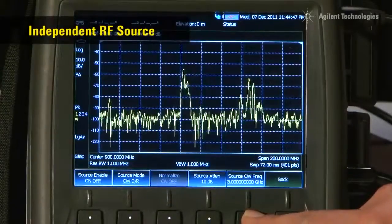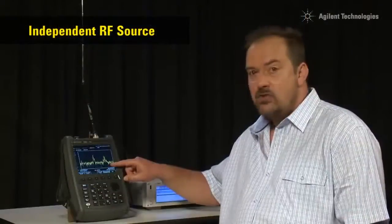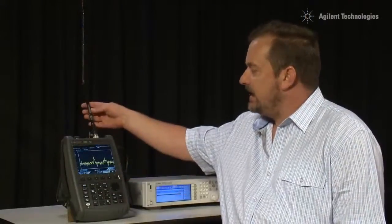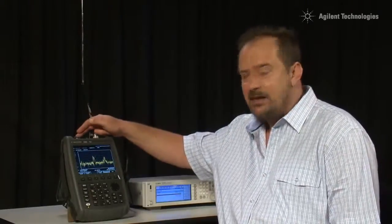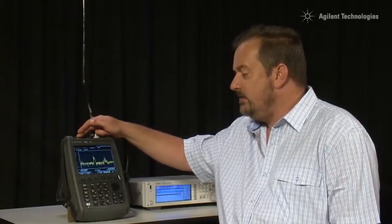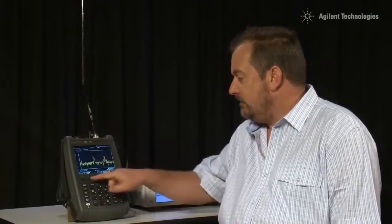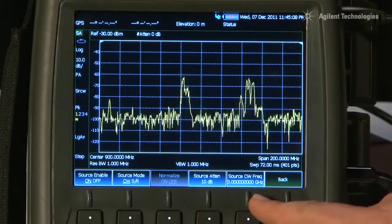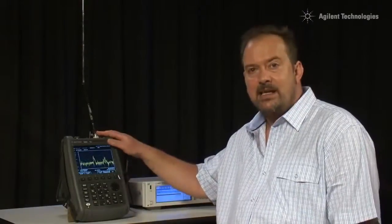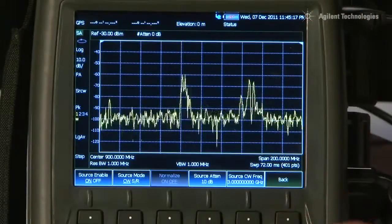One unique feature of the FieldFox is its independent source. Even though we are currently using the spectrum analyzer as a normal spectrum analyzer with, in this case, an antenna monitoring some frequencies coming off air, the signal generator within the FieldFox can be used totally independently. In this case, we have it turned on. It is being used as a CW source and the frequency can be set completely independently from whatever frequency the spectrum analyzer is set to. So we can use it as a source to perhaps test interference on a receiver or even use it as a mobile beacon.